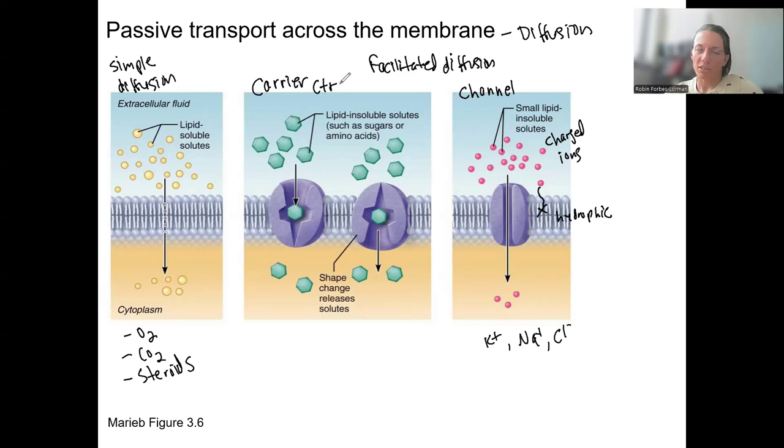Carrier molecules are similar to channels. They're also called transporters. But instead of just being open channels, they change shape to allow their molecule through. They're typically used for glucose, amino acids, other sugars, still down a concentration gradient.